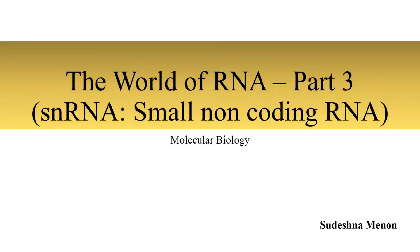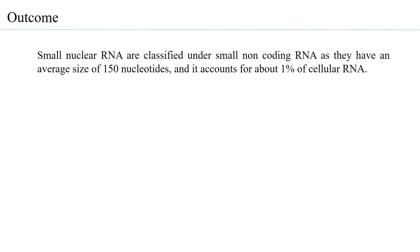We return to the world of RNA, specifically small non-coding RNA, under which falls what is called small nuclear RNA. Small nuclear RNAs are classified under small non-coding RNA as they have an average size of 150 nucleotides, although recent studies suggest they can go even beyond 300 to 350 nucleotides. Small nuclear RNA accounts for about 1% of the cellular RNA.